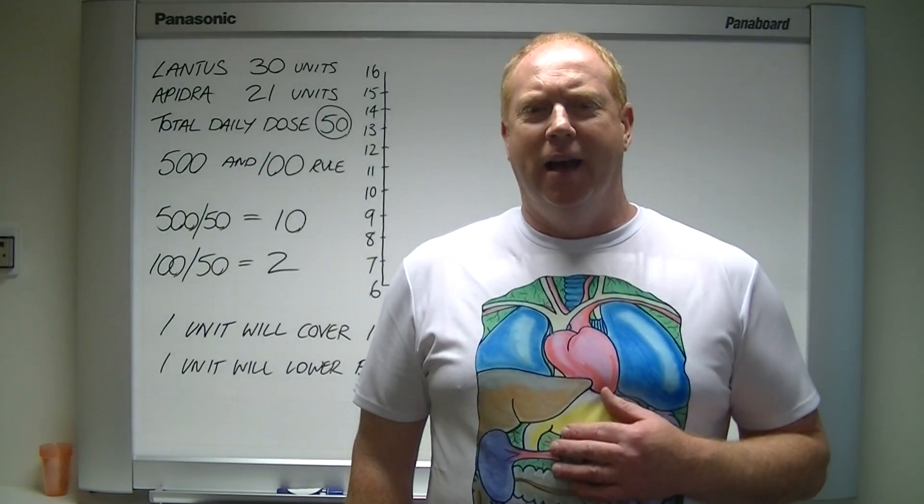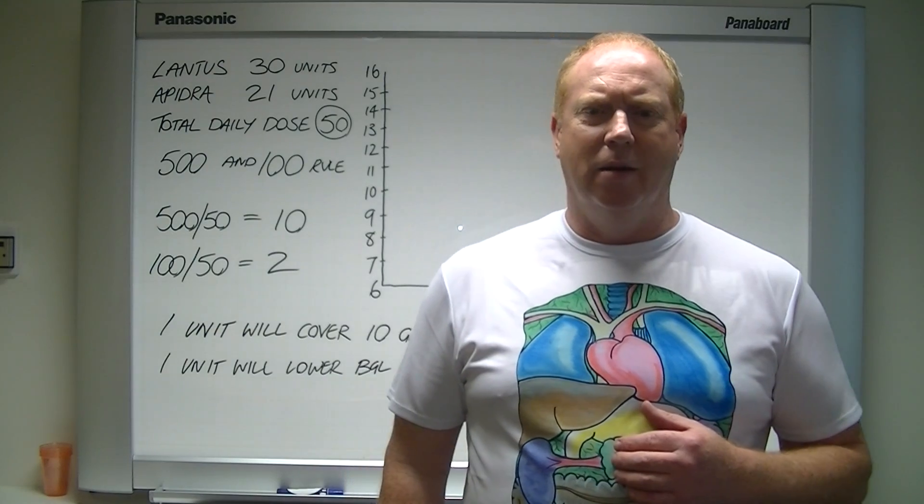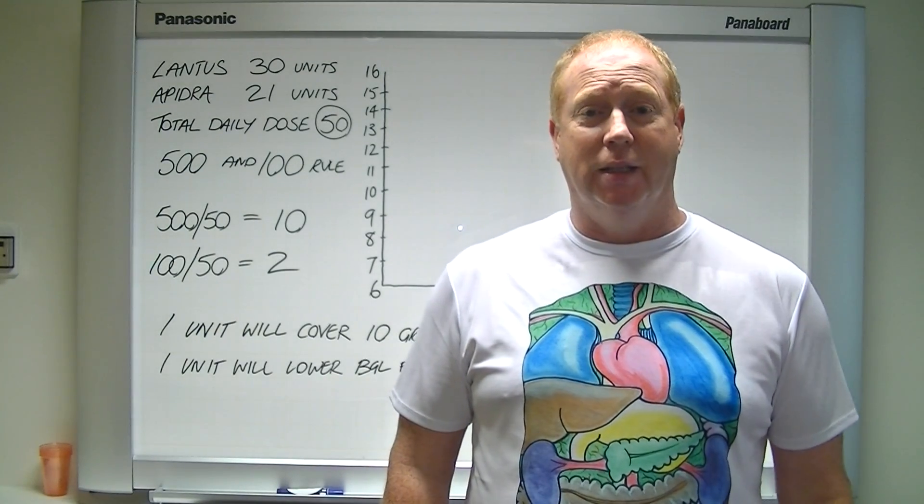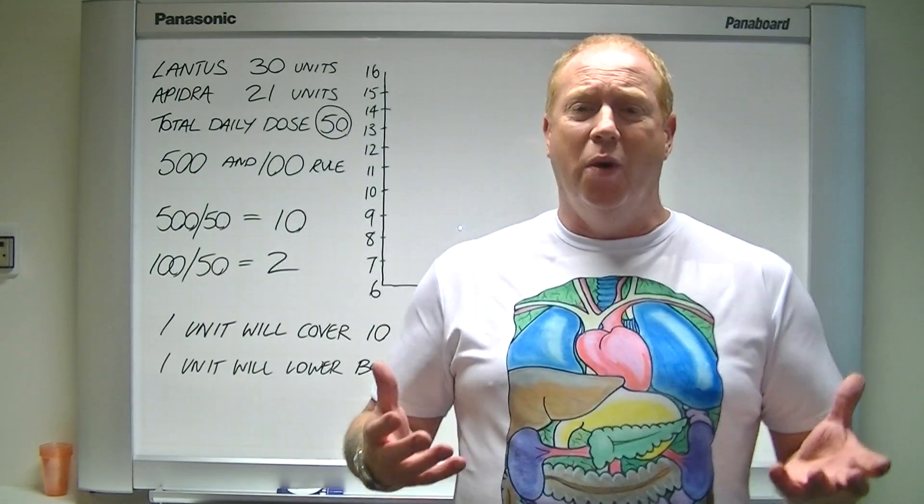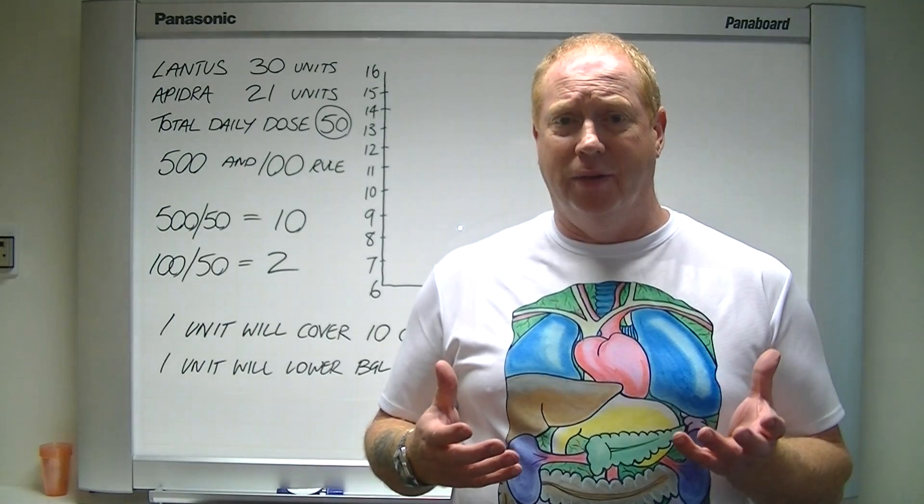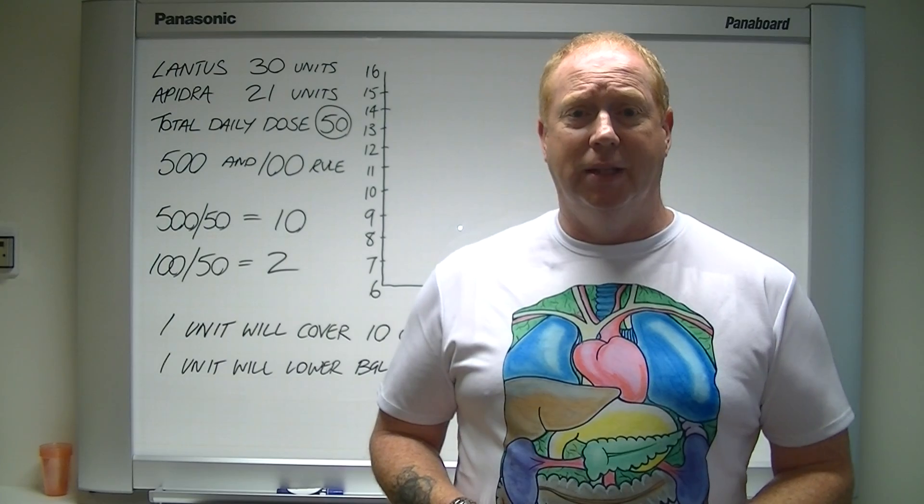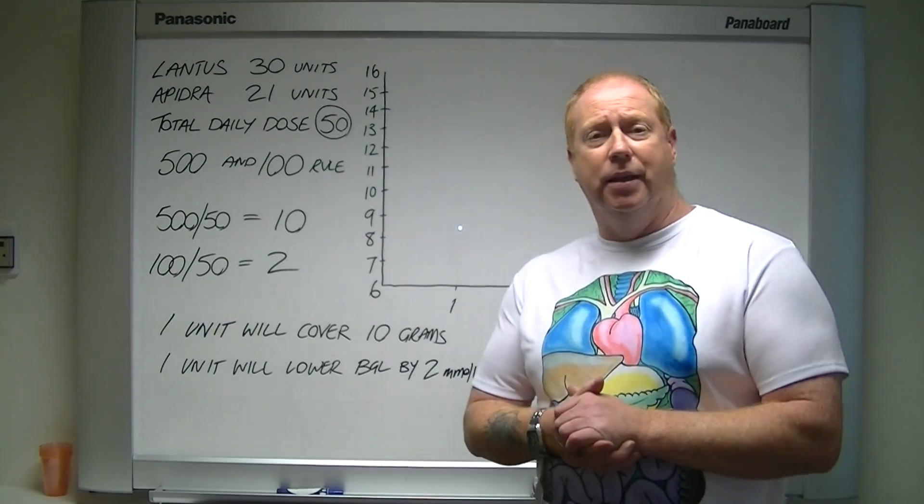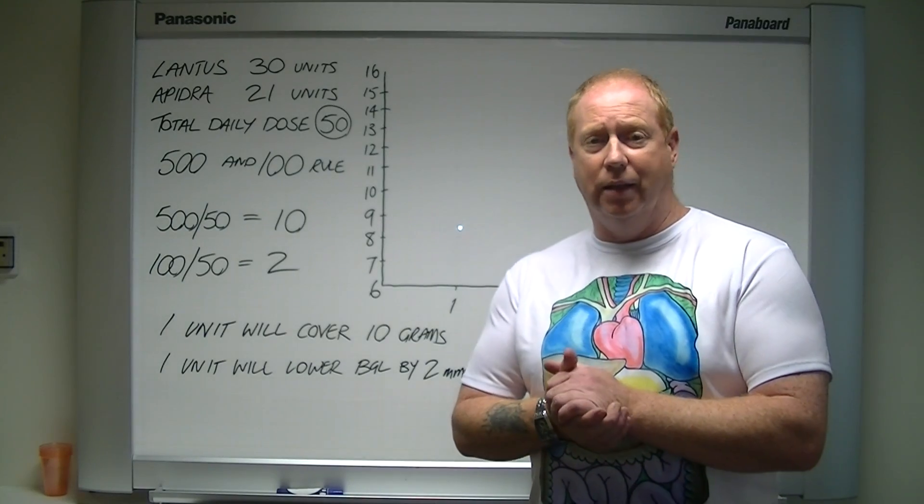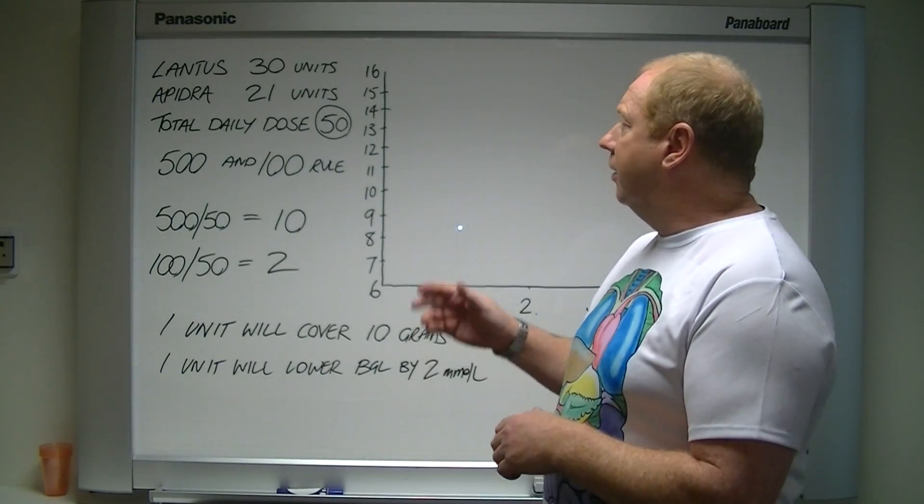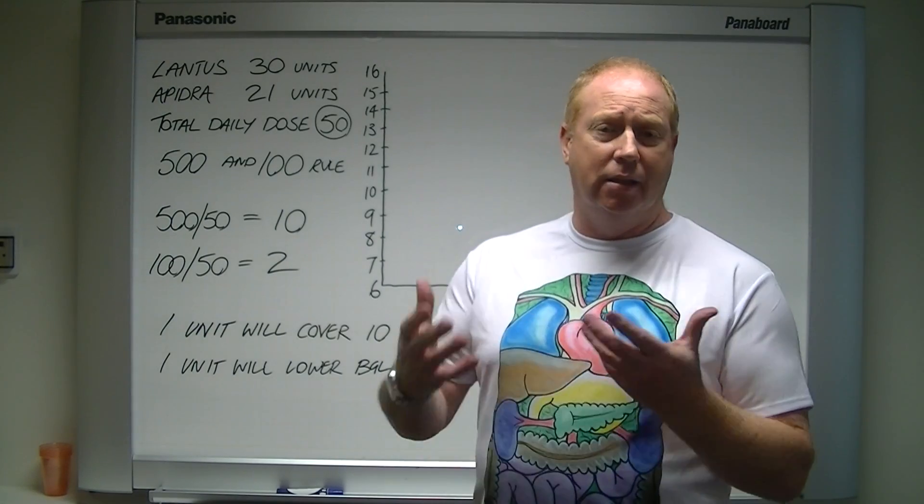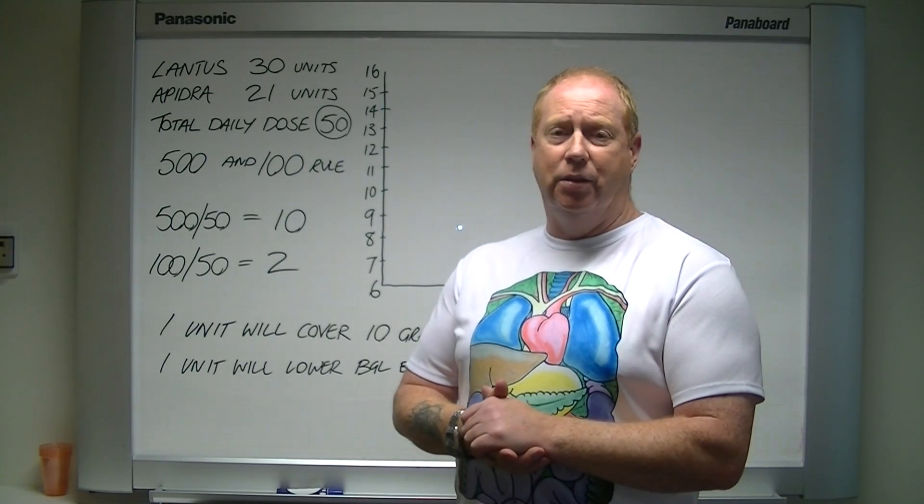Hi, Sugarman here. I want to talk to you today about mealtime or calculating mealtime bolus insulin. How do you work out how much insulin to have at a meal? Well, it's a formula we've used in diabetes for quite a while now and it's called the 500 and 100 rule to calculate your insulin dosing.